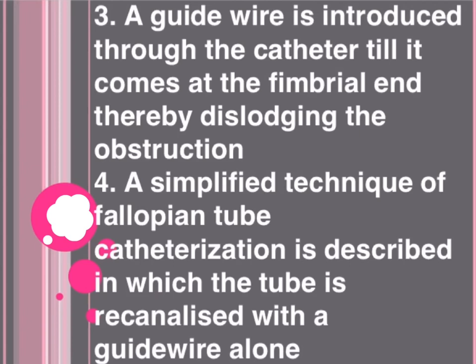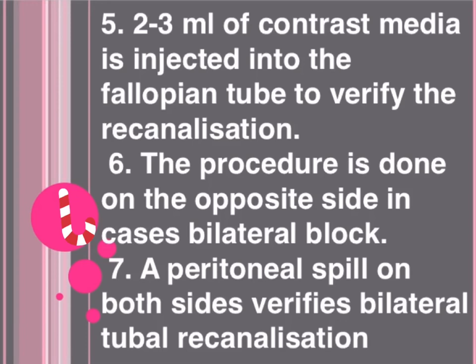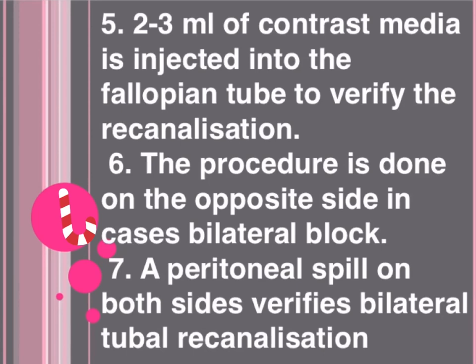Step five: 2 to 3 mL of contrast media is injected into the fallopian tube to verify recanalization. Step six: the procedure is done on the opposite side in cases of bilateral block. Step seven: a peritoneal spill on both sides confirms bilateral tubal recanalization.